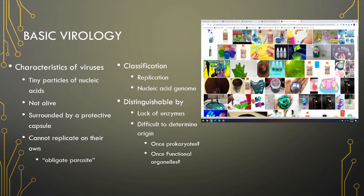Let's talk about some characteristics. We already know that these particles are not alive. They're not living creatures — they're tiny particles made up of nucleic acids. The biggest virus is as big as the smallest bacterium, and they're surrounded by a protective capsule called a capsid. They can't replicate on their own; they hijack the host machinery and make it do their dirty work, and because of this we call them obligate parasites. We classify them by the diseases they cause, how they replicate, their shape or morphology, what genetic material they contain, and the type of host they invade.